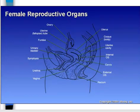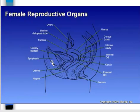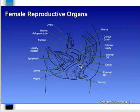Looking at a sagittal view of the female reproductive organs, from anterior to posterior we have the pubic symphysis, and right behind it is the bladder. Right behind the bladder, we have the uterus and the vagina, and then back behind that we have the rectum.